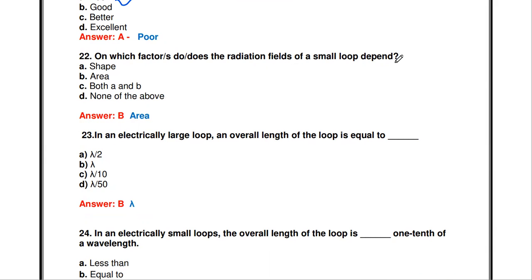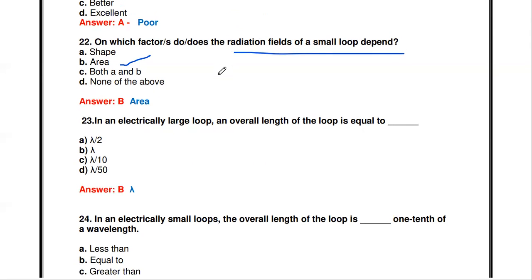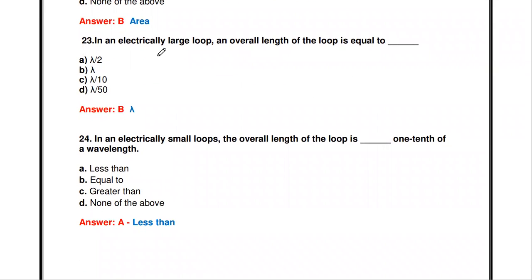On which factor does the radiation field of a small loop depend? The options are shape, area, both, or none. The answer is area. The radiation field of a small loop depends on the area — not the shape — of the loop.